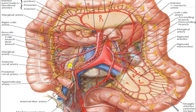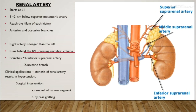The visceral paired branches include the renal arteries and gonadal arteries, along with the middle suprarenal artery. The renal artery is quite large, 4 to 8 millimeters wide, arising from the aorta at the level of L1, one to two centimeters below the superior mesenteric artery.